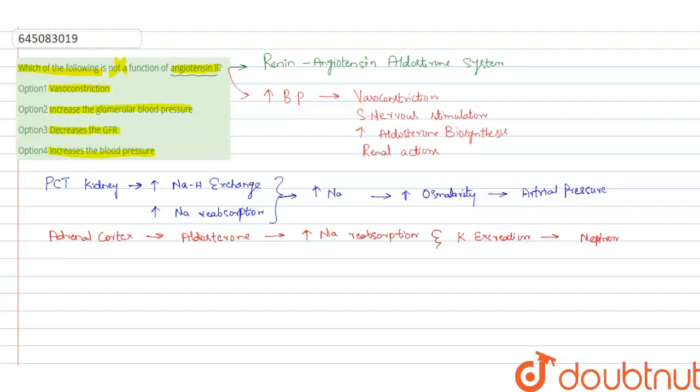Angiotensin 2 also causes vasoconstriction in the systemic arterioles.